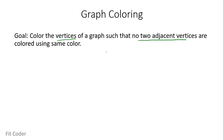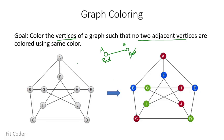For every edge present in the graph, both the vertices should be colored using a different color. So if this vertex is colored red, then the other vertex should not be red. Let's see an example of this.